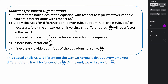Anytime we differentiate something involving y, which is not the variable we're differentiating with respect to, we include a dy/dx or y prime to identify that it's not the variable we're taking the derivative with respect to — it's kind of using the chain rule. After that, we isolate all terms with y prime or dy/dx on one side, factor out dy/dx, and then divide so that we can isolate our dy/dx. Basically, anytime you differentiate something with a y in it, you multiply it by dy/dx or y prime, and in the end we solve for the derivative of y with respect to x.